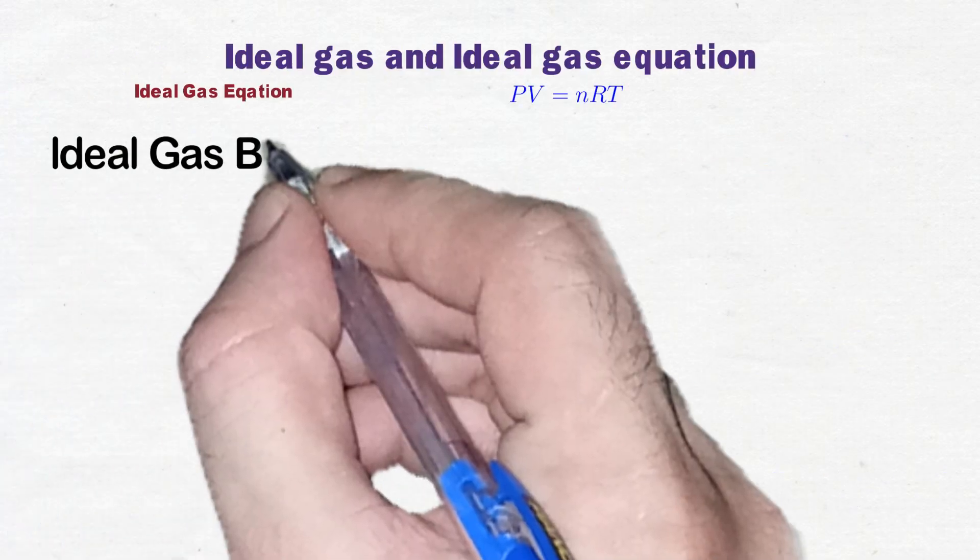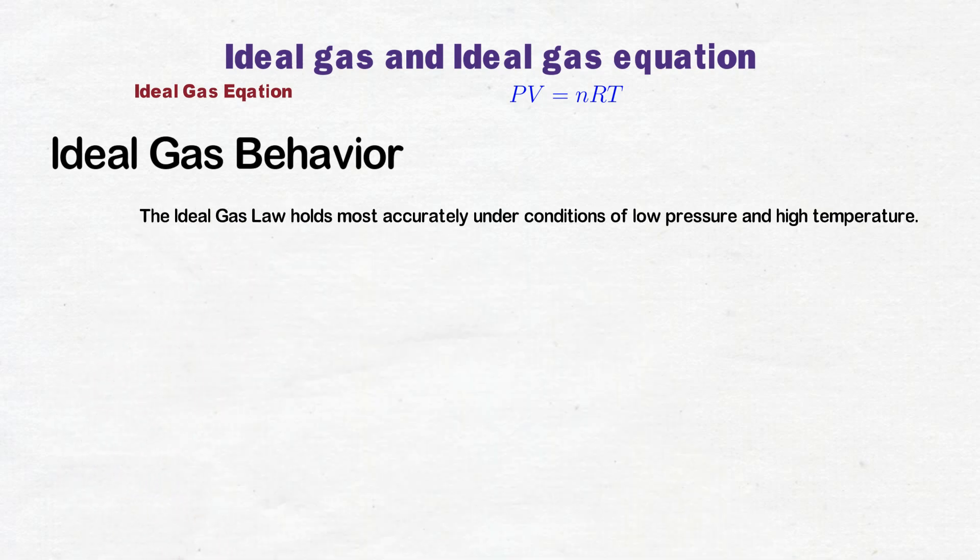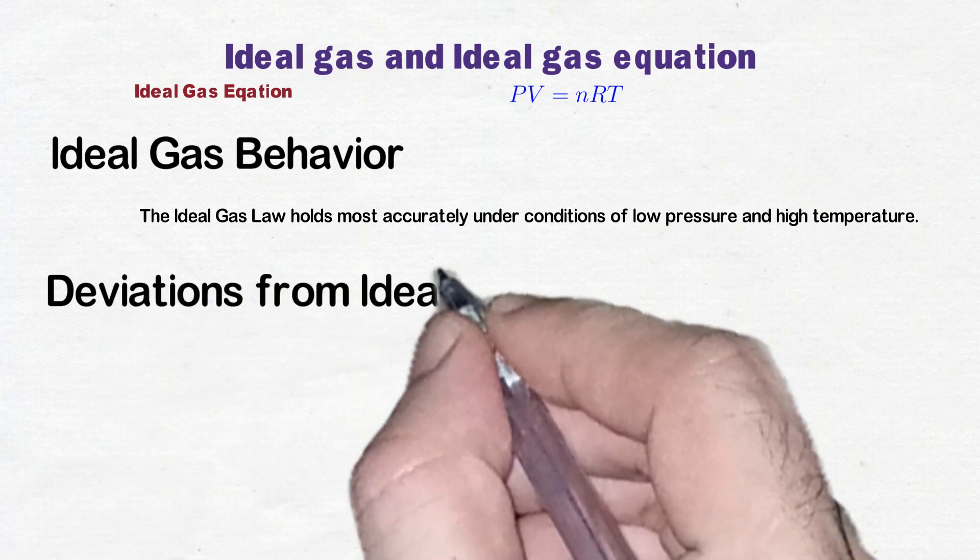Ideal gas law holds more accurately under conditions of low pressure and high temperature. In such an environment, the gas molecules are far apart and their individual volume and intermolecular forces are insignificant. As a result, real gases approximate ideal behavior.